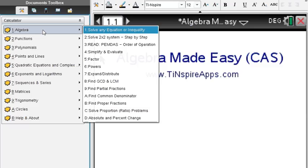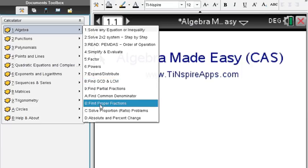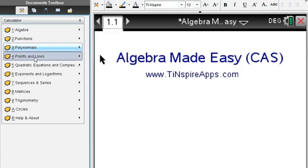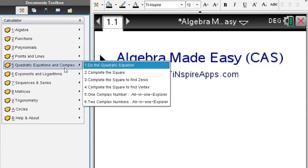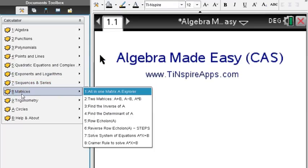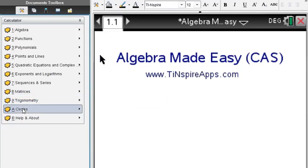So what does the Algebra app entail? You can see all Algebra features that you will ever learn in your Algebra class: functions, polynomials, given points and lines, quadratic equations and complex numbers, exponents, logarithms, sequences and series, matrices, trigonometry, circles.